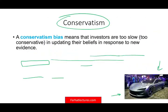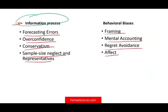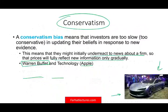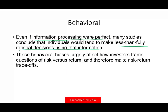Those were the four errors of information processing. Now we look at behavioral biases — biases that we have even when information is processed correctly. Many studies conclude that individuals tend to make less than fully rational decisions even with correct information. These behavioral biases largely affect how investors frame questions of risk versus return and therefore make risk-return trade-offs. It's about how things are framed to you, or how you frame them to yourself — the framing makes a difference.